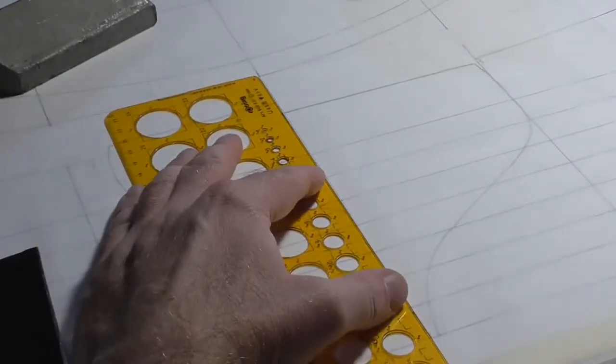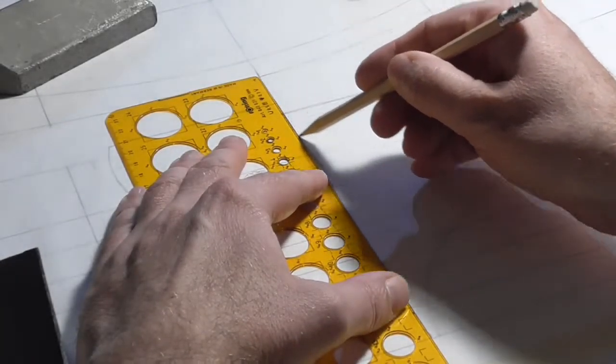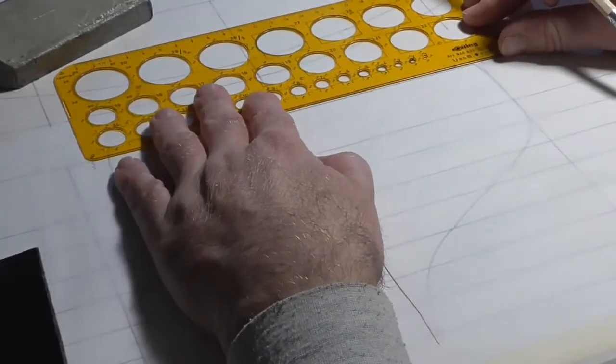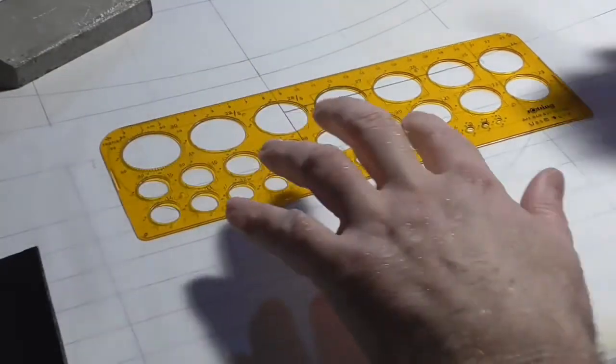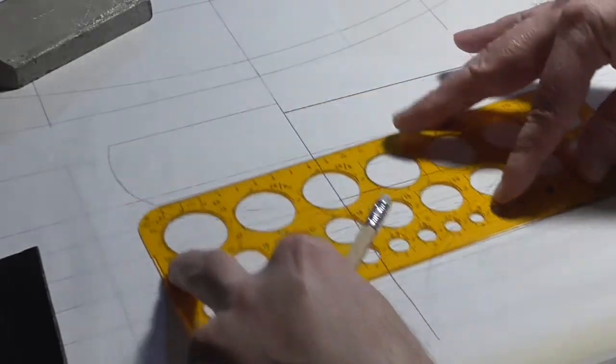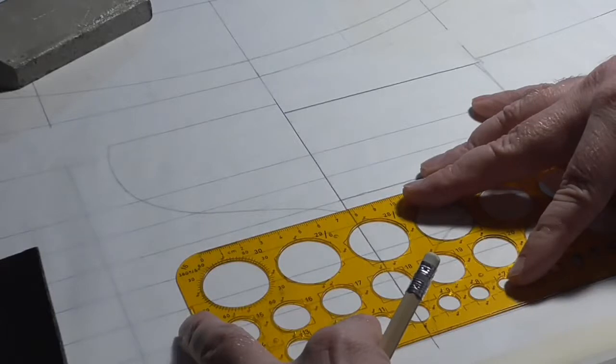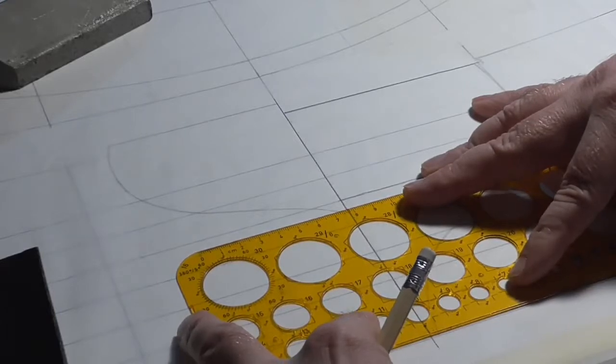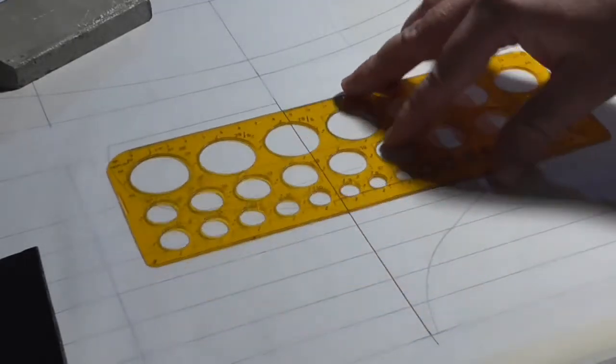And now I start with the straight lines. So I take a ruler and start with the center line, and the top, the water line, and the base line. I don't need much from the base line, just this little piece.